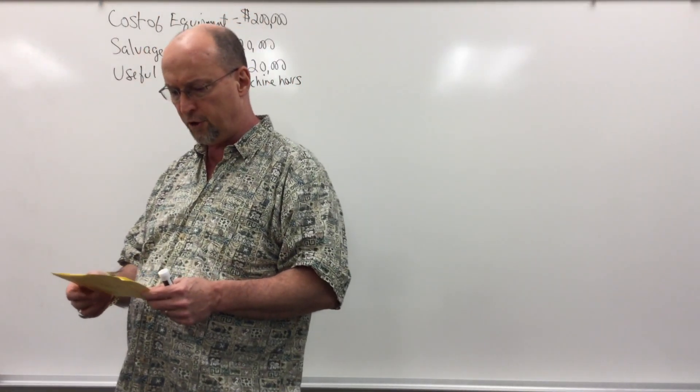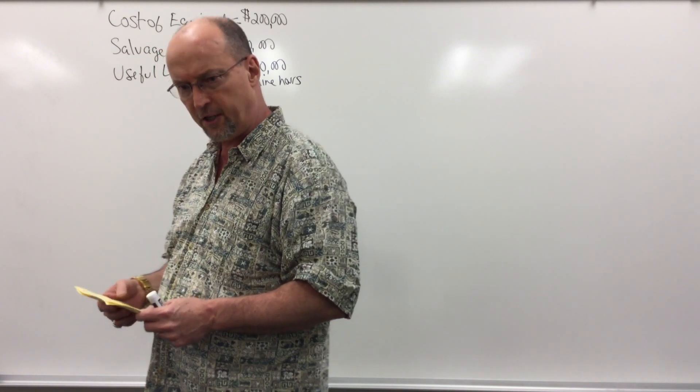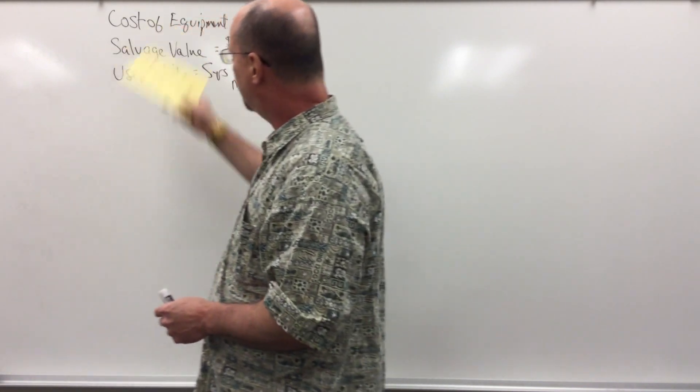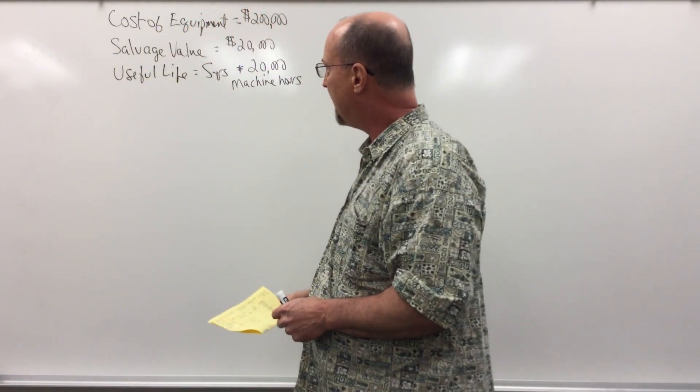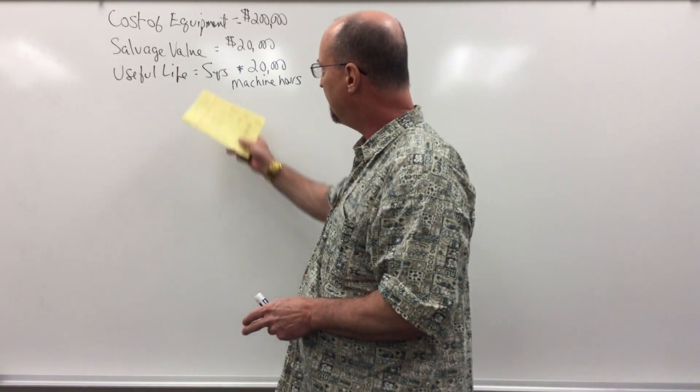We're going to do a quick example of how to do straight-line depreciation. The cost of the equipment is $200,000, the salvage value is $20,000, the useful life is 5 years and 20,000 machine hours.